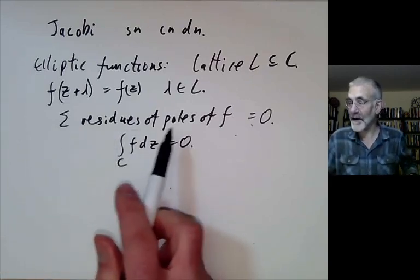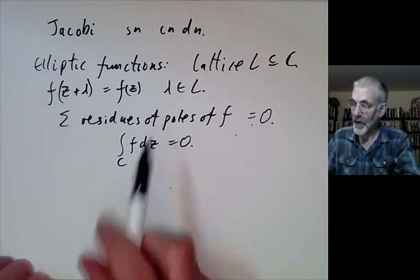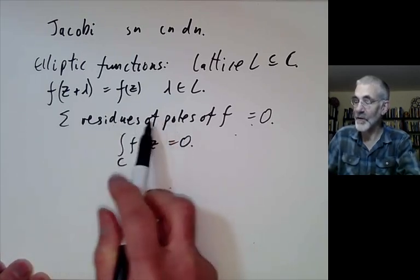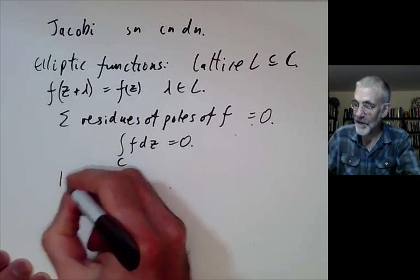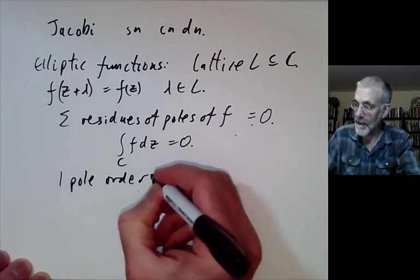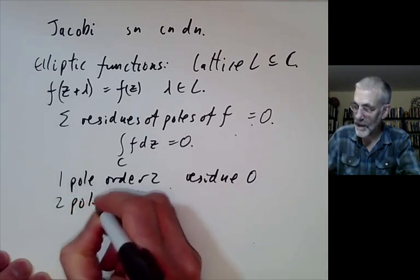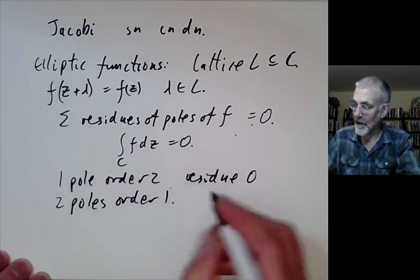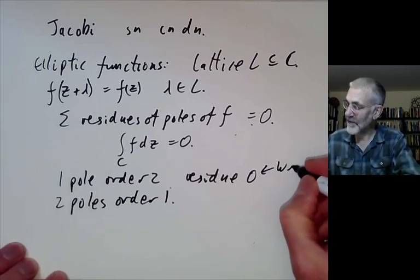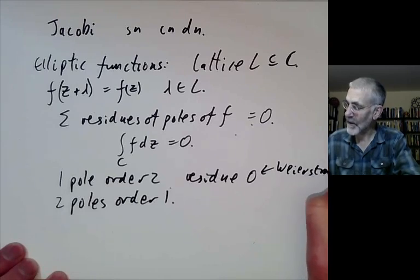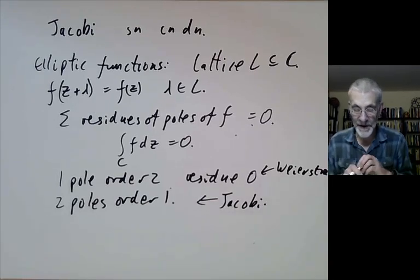So if we want to find the simplest sort of functions, we might try having one pole. But one pole of order one doesn't work because the residue would have to be zero, so it wouldn't exist. There are two possibilities: either one pole of order two with residue zero, or two poles of order one where one has residue minus the other. Roughly speaking, the first is the approach taken by Weierstrass, discussed in the previous lecture, and the second is the approach taken by Jacobi, which we discuss today.